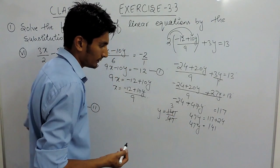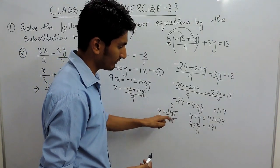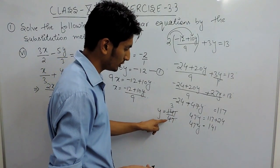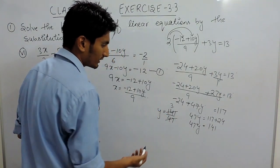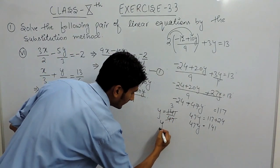because 3 into 7 is 21 and carry 2, and 3 into 4 is 12 and carry 2 is 14. So the value of y is 3.